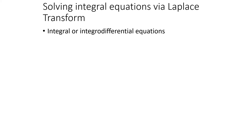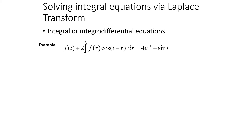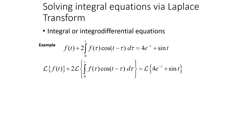Being able to take the Laplace transform and inverse Laplace transform dealing with integrals allows us to solve integral equations — equations that have integrals or both integrals and derivatives — using the same approach we've used for differential equations. Our example is: f of t plus 2 times the integral from 0 to t of f of tau times cosine of t minus tau with respect to tau equals 4 e to the negative t plus sine of t.